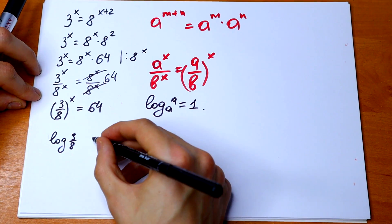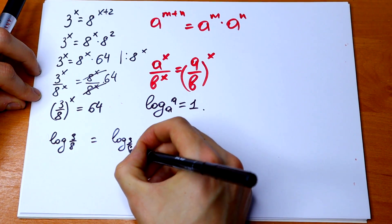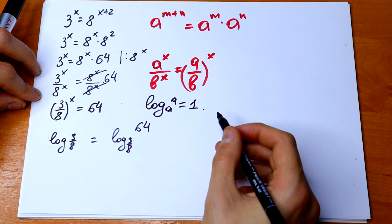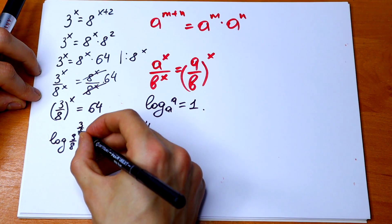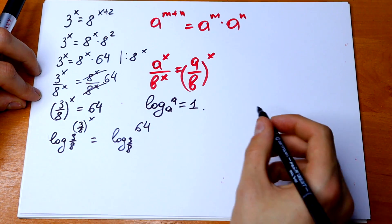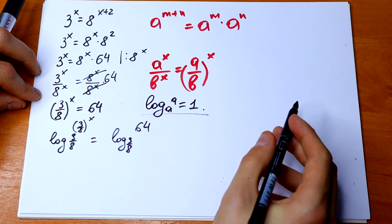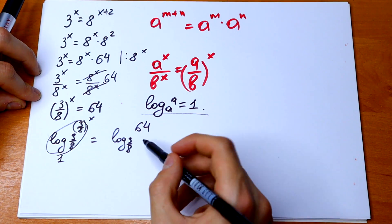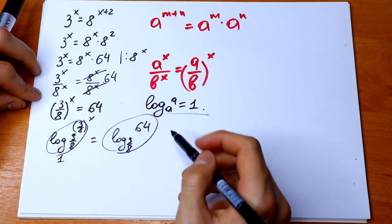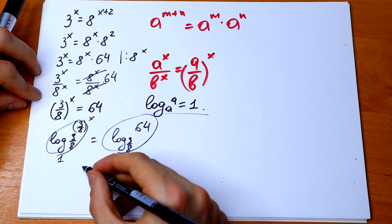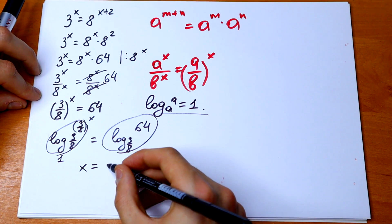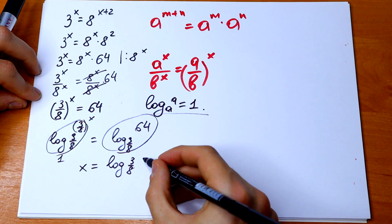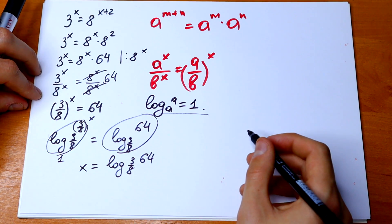Log base 3 over 8 equals log base 3 over 8. So from both of the sides, right here we will have 64, and right here we will have 3 over 8 all raised to the power x. So using this rule, we can use this right here. So it will be equal to 1. And this we can leave on the right. So we will have x equals log base 3 over 8 of 64.